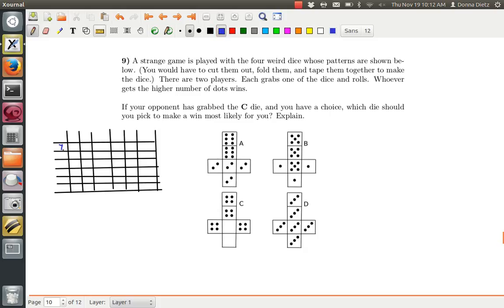C gets the values 4, 4, 4, 4, 0, 0, and if you pick die A, you get 6, 6, 2, 2, 2, 2. In this case, 6 has to win against 4, so this creates these vertical stripes of wins for player A in this grid.